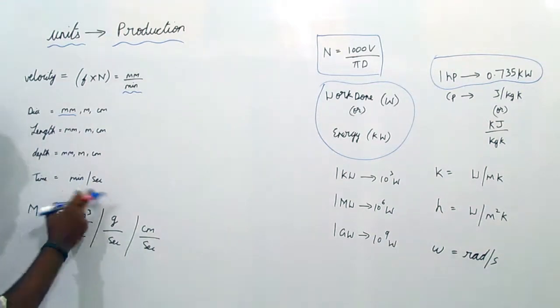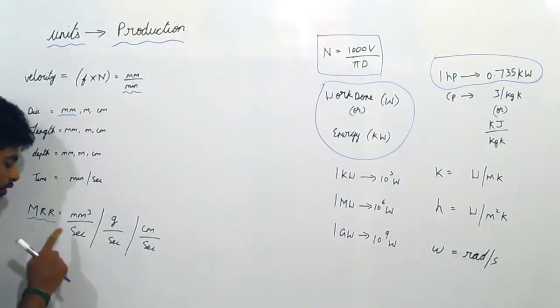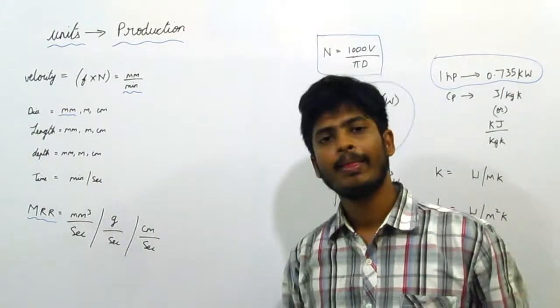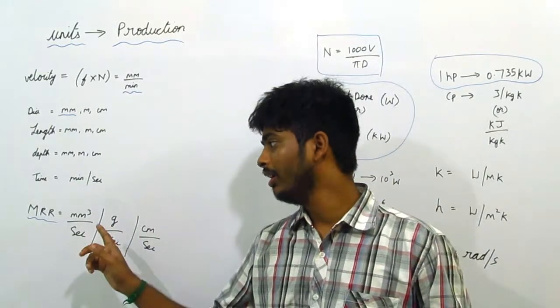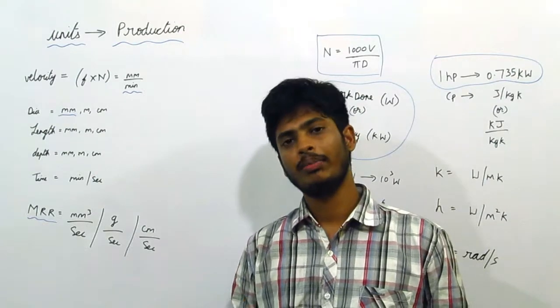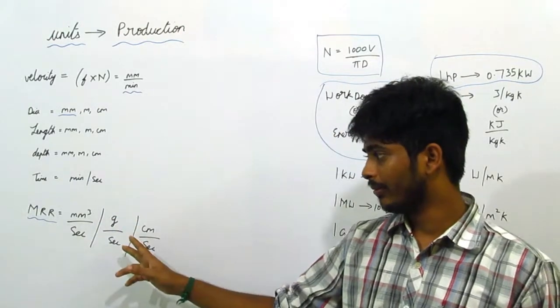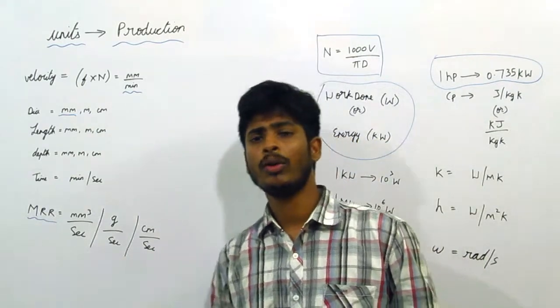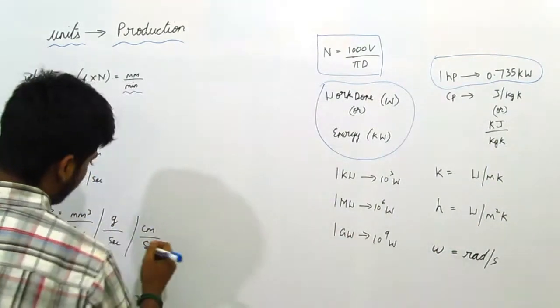This is MRR, material removal rate. It is given by mm³ per second. Material removal rate varies for different topics in production. For example, under machining processes, material removal rate is given by feed into depth into velocity, so mm³ per second. For gram per second, it is given for the last topic, that is NTM, non-traditional machining measures. For some subtopics it is given by centimeter per second.